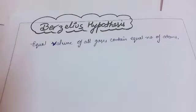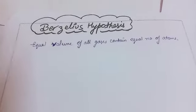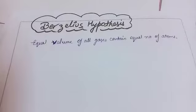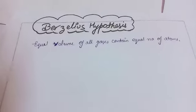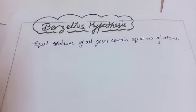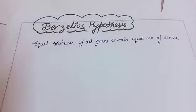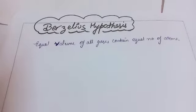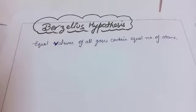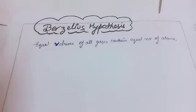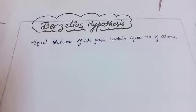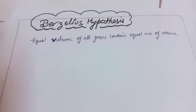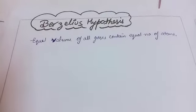First of all, understand the difference between hypothesis and law. Berzelius hypothesis means that someone has said something without proving it or without any experimental verification — so that will not become a law, it's only a statement. A law, on the other hand, is something that has been proved. So Berzelius hypothesis is not a law.